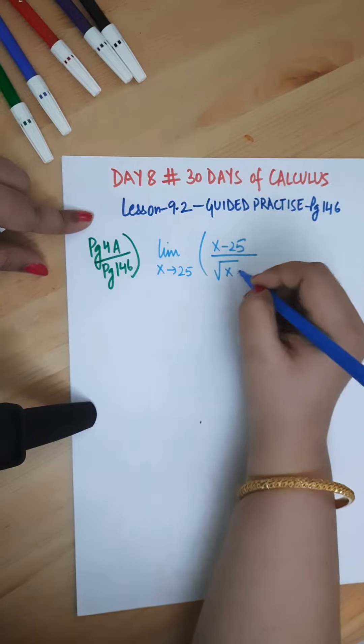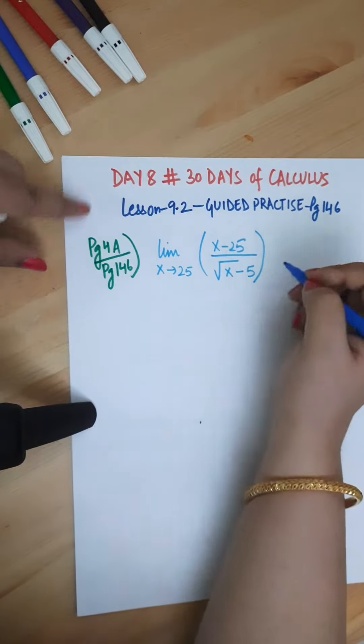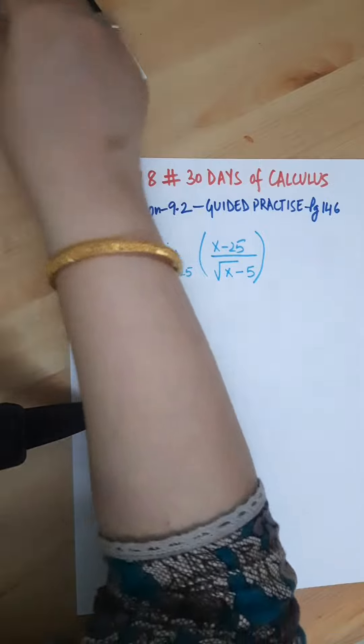Limit as x approaches 25 of x minus 25 divided by square root of x minus 5.